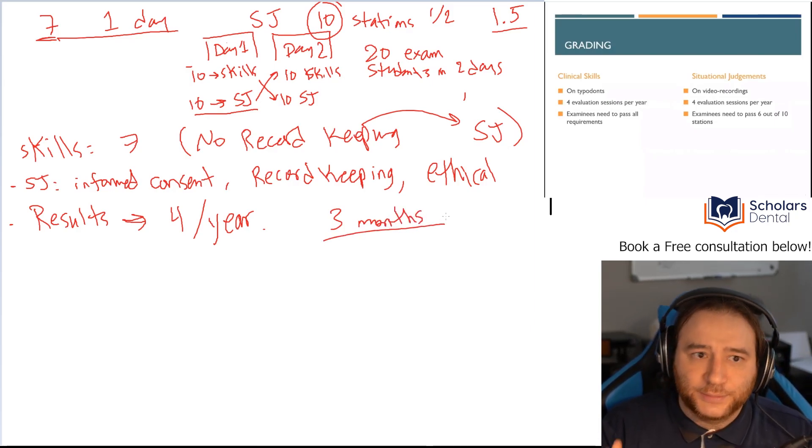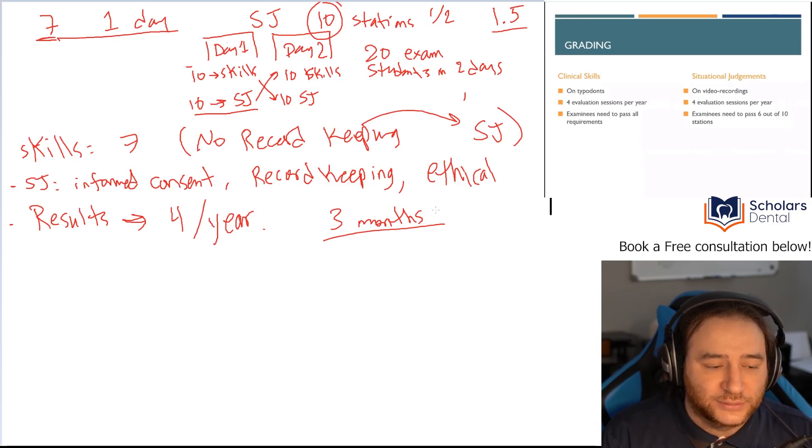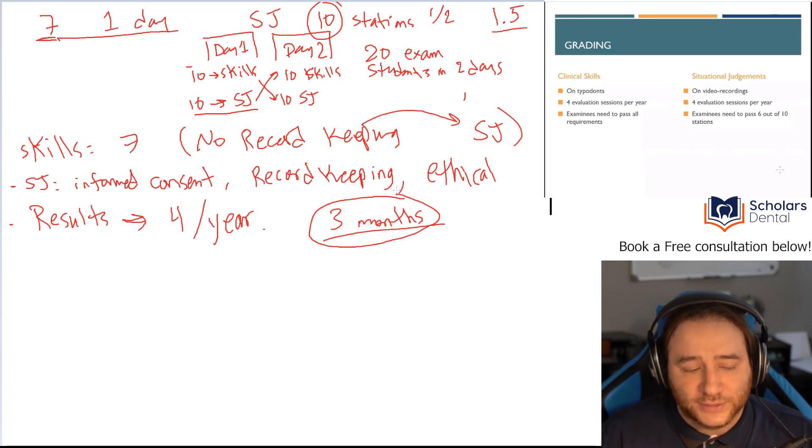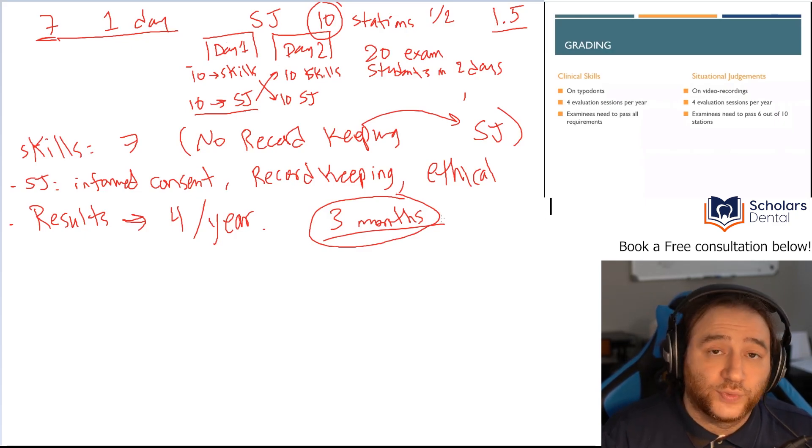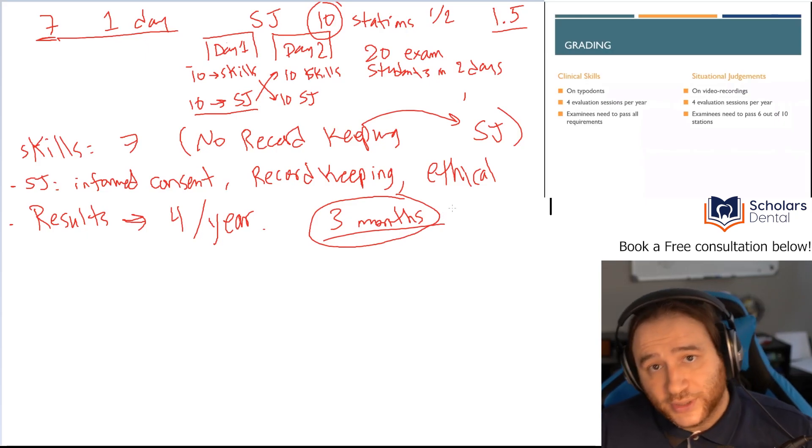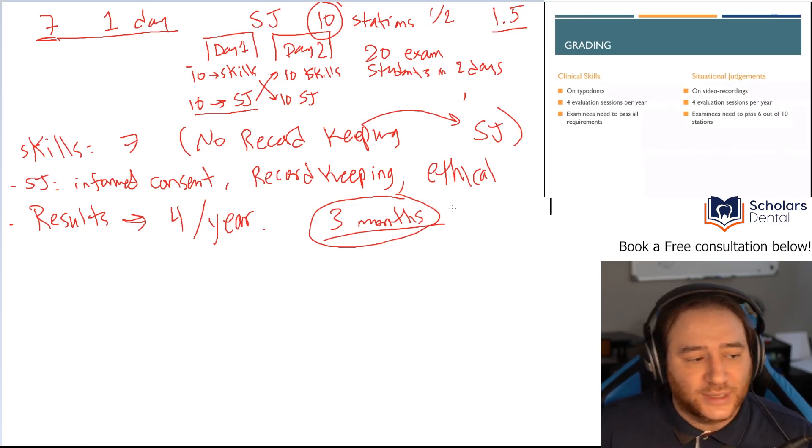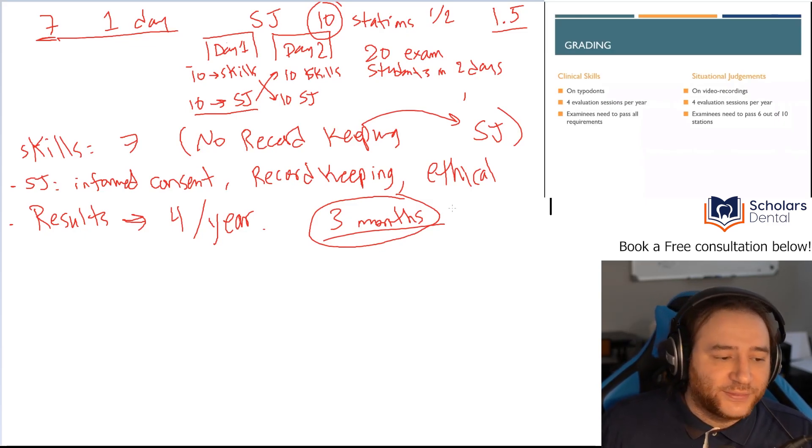That means the maximum time you have to wait for results is going to be three months. Let's say you did the exam just after one result came out, then you would have to wait three months for your results. But if you did the exam closer to the result date, maybe you'll wait less than a month for your results. Does that make sense?